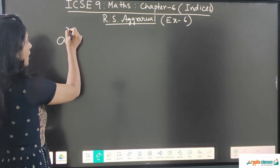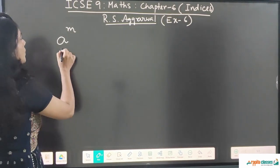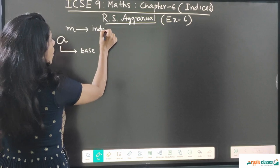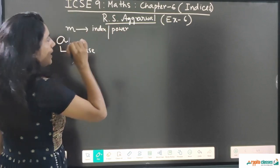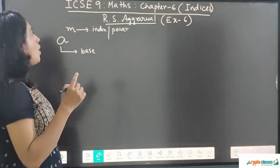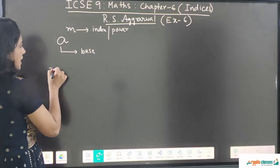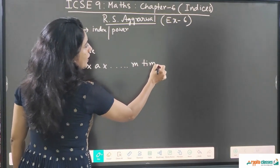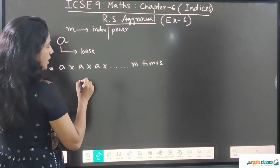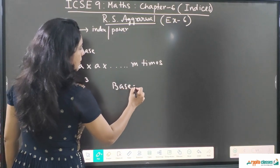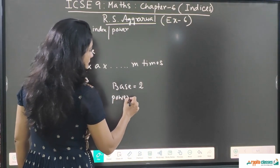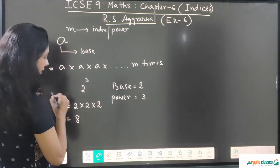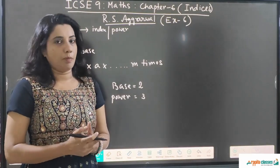Suppose if I write a to the power m, here a is called the base and m is called the index, or it is called the power. It is read as 'a to the power m' or 'a raised to m'. It means a multiplied by itself m times. So if I write 2 to the power 3, the base is 2 and the index is 3, meaning 2 × 2 × 2 = 8. This basic concept of Indices you have already learnt in your previous classes.